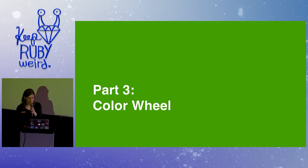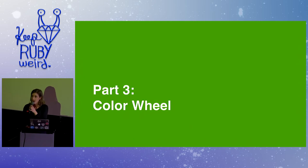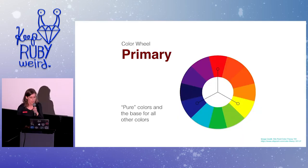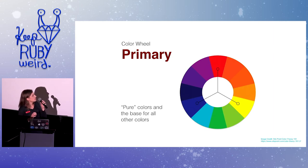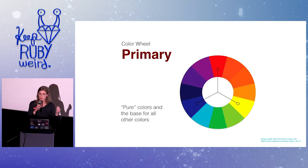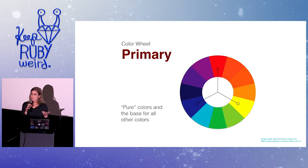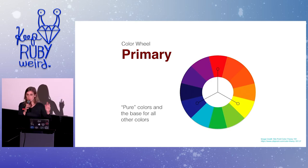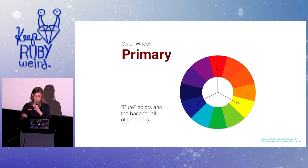Moving forward — now we're talking about the color wheel. This is going to help us understand the purity of colors and how specific colors are created. The first thing we need to think about is primary colors. Primary colors are pure colors and the base of all other colors. They're the most simple colors — you cannot create a primary color by mixing any other color. They are red, blue, and yellow — our base colors, and all other colors come from them.